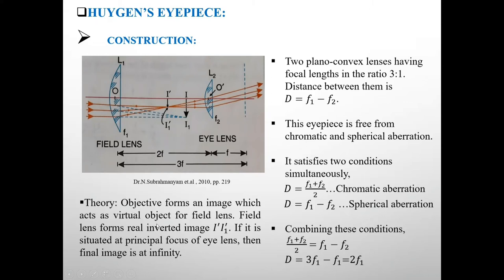See the theory. Objective forms an image which acts as virtual object for field lens. Field lens forms a real inverted image I1'. If this image is situated at principal focus of eye lens, then final image will be at infinity.